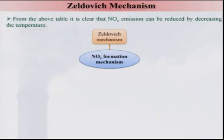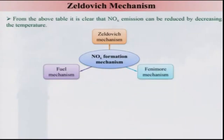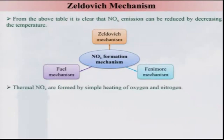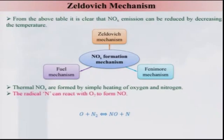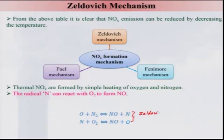Regarding NOX formation mechanisms, one can think of the Zeldovich mechanism, the fuel NOX mechanism, and the Fenimore (prompt) mechanism. Thermal NO comes from the Zeldovich mechanism, proposed originally, where thermal NOX is formed by simple heating of oxygen and nitrogen: O + N2 → NO + N, and the radical N formed in this reaction can react with oxygen to form NO. These two reactions form the Zeldovich mechanism.